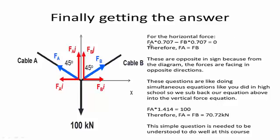the horizontal force of A times by 0.707, minus, because it's in the opposite direction, the horizontal force of B times by 0.707, equals 0. So therefore, the horizontal forces are equal to one another. These are opposite in sign, because from the diagram, the forces are facing in opposite directions.